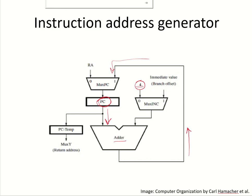Program counter will be incremented by PC plus 4 and it will be sent back to the PC. However, if it is a branch instruction, and an immediate value has to be added to the contents of the program counter, it will come from here. So if we have an instruction like branch to a particular offset, this offset has to be added to the program counter. In that case, this immediate value — which is the branch offset — will be added to the program counter and will be sent back to the PC. When the PC has the new branch target address, it will fetch the next instruction from that particular target address.